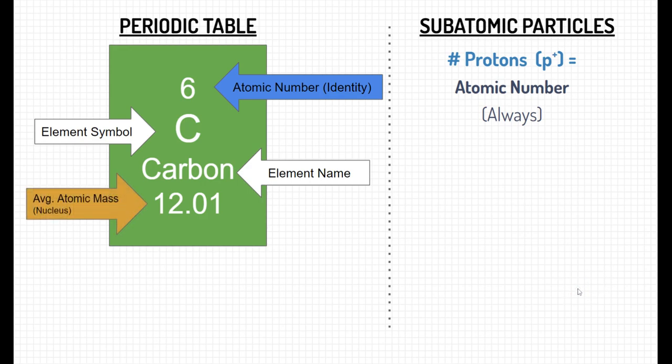We need to rely on the periodic table for a lot of this information. The last number, typically the bigger number and always usually a decimal, is called the average atomic mass. This is the average mass of an element.